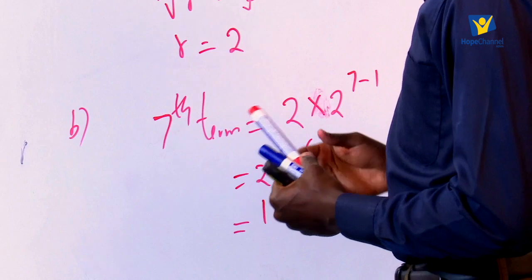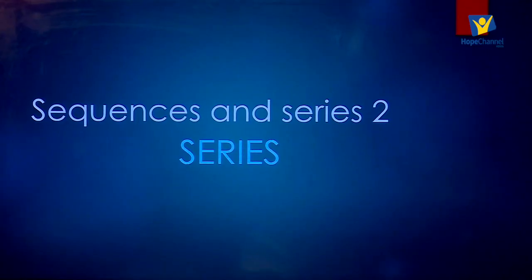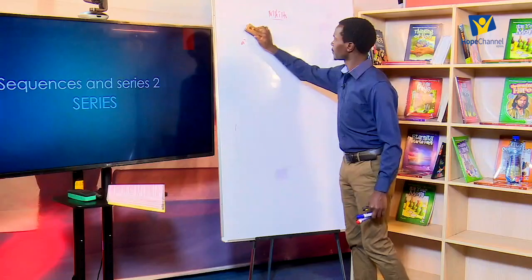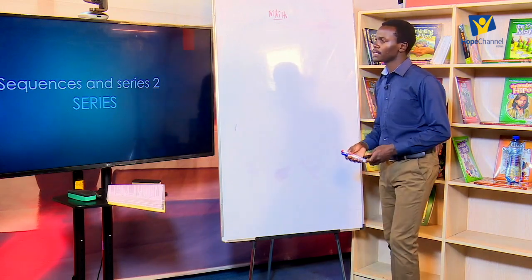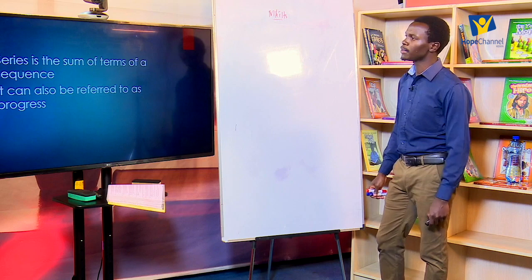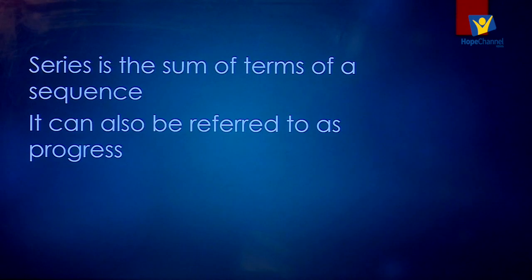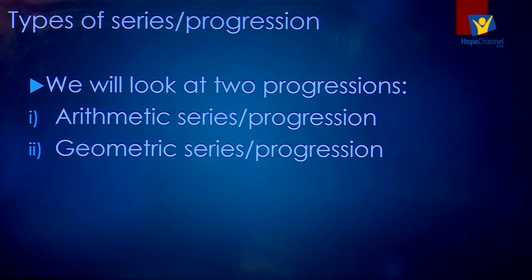I want to believe you tried out various examples on sequences — arithmetic sequence and geometric sequence. Now let's move on to our segment today, which is about series. After looking at how to get the terms of a sequence, when we have many terms or more than one term, we have what we call series. Series is basically the sum of terms in a sequence, also referred to as a progression. We have a geometric series and an arithmetic series.